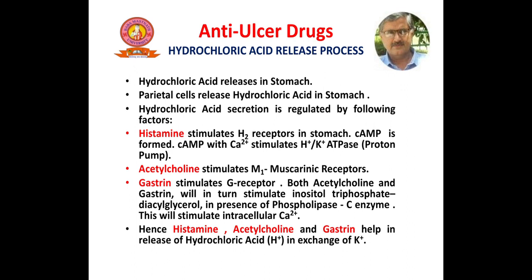Before we go to the anti-ulcer drugs, let us have a look at how hydrochloric acid is released in the stomach and what are the various factors which regulate the release. Hydrochloric acid is released from the parietal cells, and its secretion is regulated by three important factors.